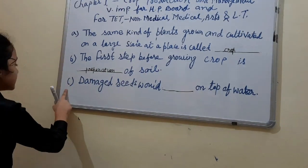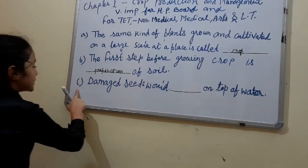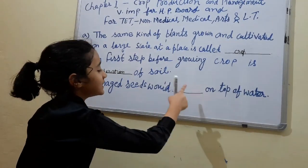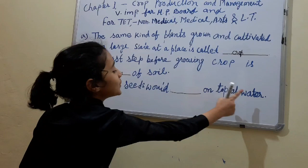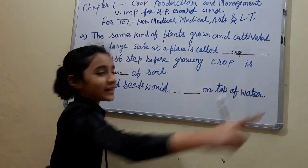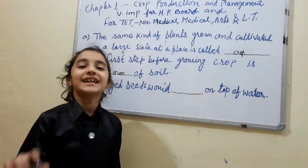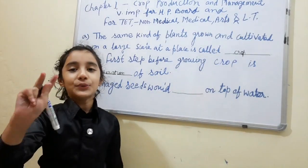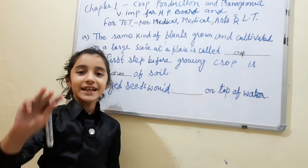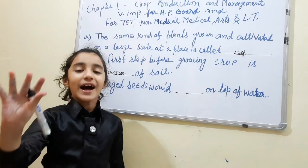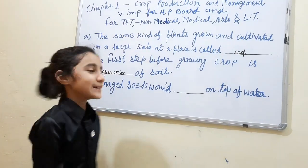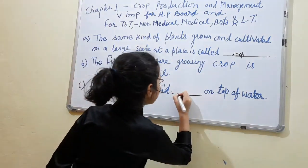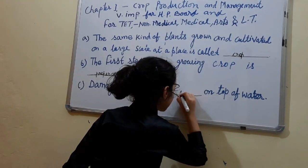Next question. Damaged seeds would dash on top of water. I'll give you 5 seconds. 1, 2, 3, 4, 5. Your time is up. The answer to it is: float.